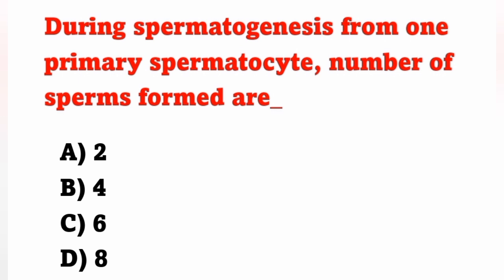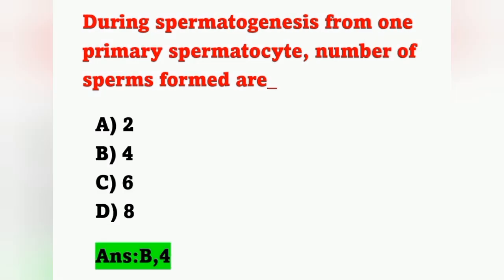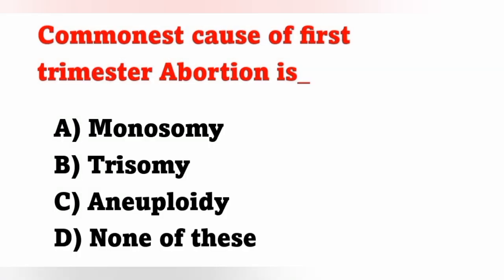The next question: during spermatogenesis, from one primary spermatocyte, how many sperms are formed? Options — A: 2, B: 4, C: 6, D: 8. From one primary spermatocyte, four sperms are formed during spermatogenesis — option B is the correct answer.